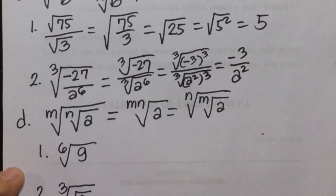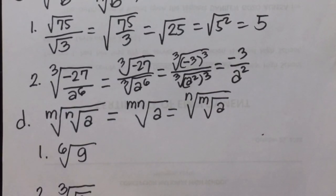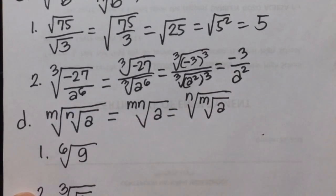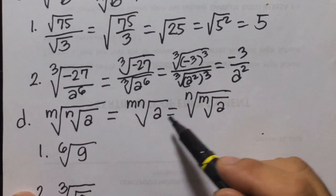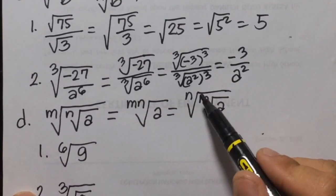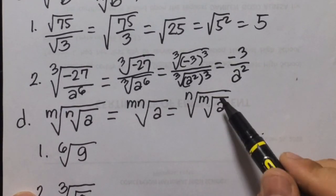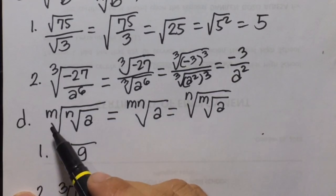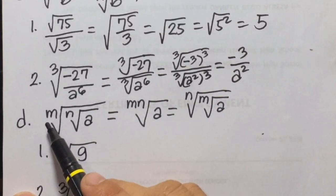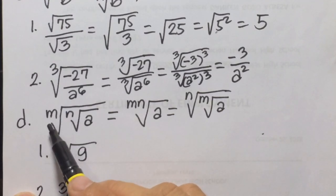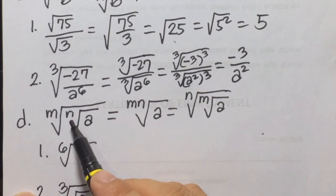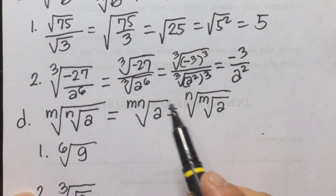Then law D: the m root of the n root of a equals the mn root of a, which also equals the n root of the m root of a. You can interchange the order or index — you can swap m and n.